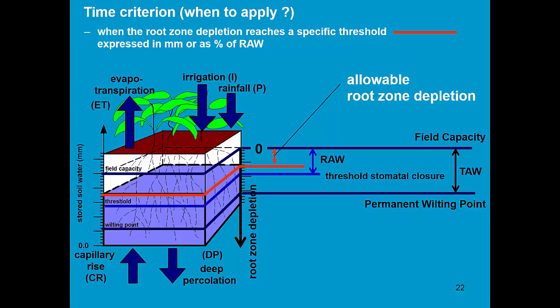Rho is zero at field capacity, there is no root zone depletion, and 100% when the threshold for stomatal closure is reached.